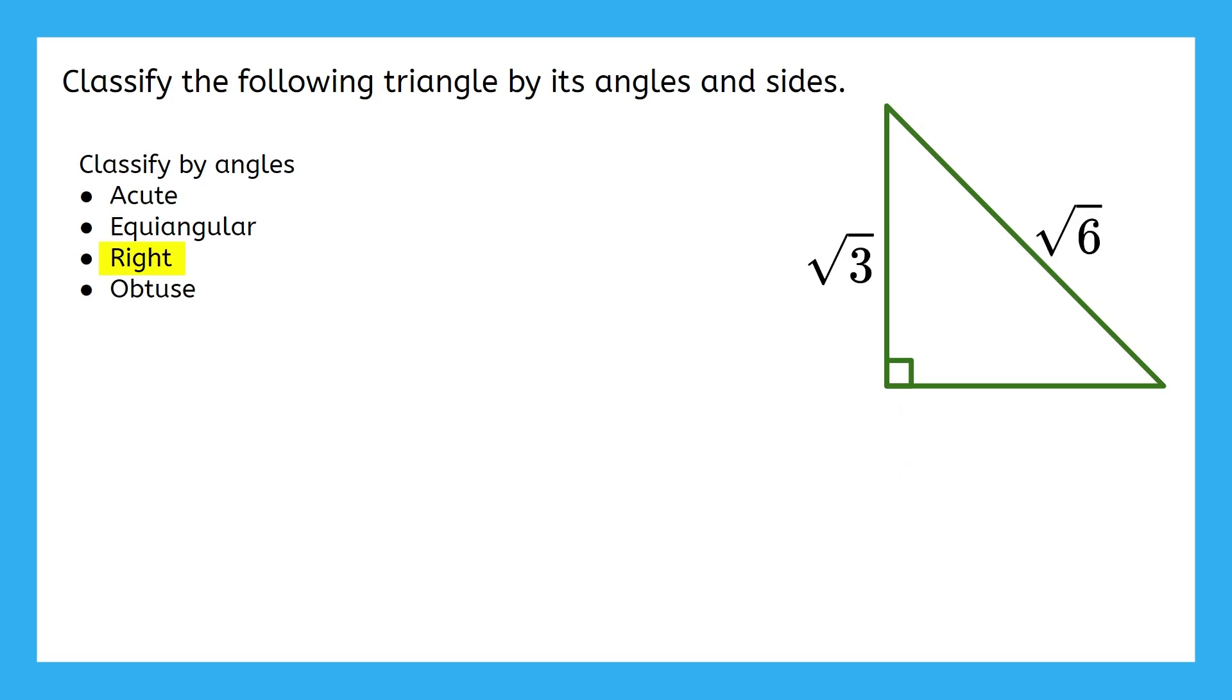Now let's classify this by its sides. Here are our options. Do we know if any of the sides on our triangle are the same length? We were only given two of the side lengths, so we'll need to do some more investigating. How can we find the missing side when we have a right triangle?